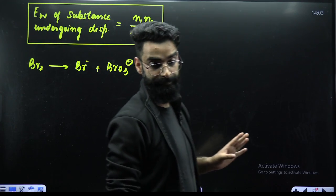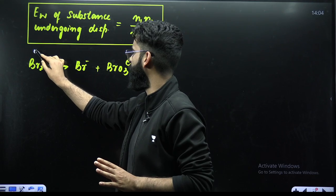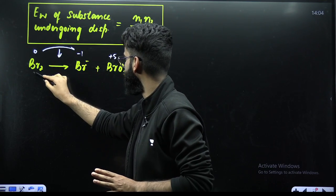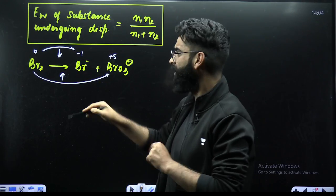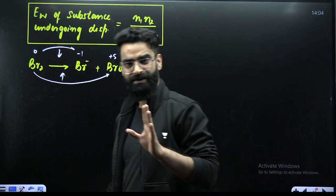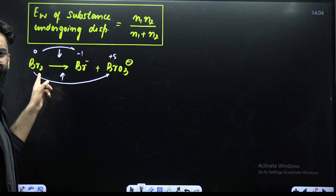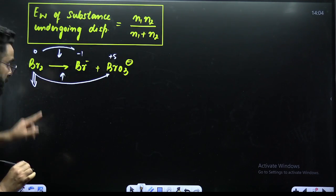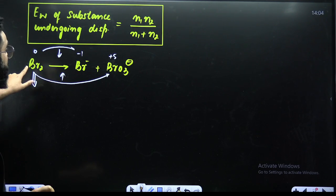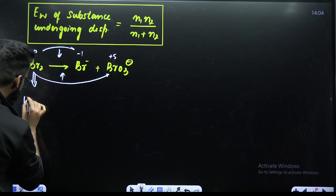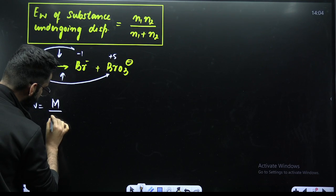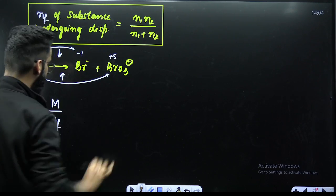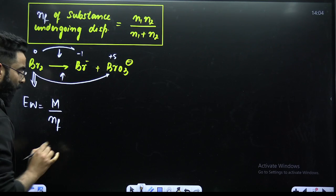Concept 4: equivalent weight of the substance undergoing disproportionation. Looking at the Br₂ reaction: the oxidation state of Bromine starts at 0, goes to −1 (reduction) and also to +5 (oxidation). Since Br₂ is simultaneously undergoing oxidation and reduction, it is undergoing disproportionation. Equivalent weight = molecular weight / n-factor. The n-factor = n₁n₂ / (n₁ + n₂).